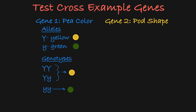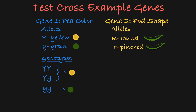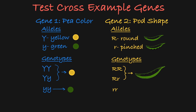The second gene we will look at confers pod shape. This gene has two alleles: a dominant allele that results in a round pod shape and a recessive allele that results in a pinched pod shape. So the homozygous dominant and heterozygous genotypes result in a round pod, and the homozygous recessive genotype results in pinched pods on the plant.